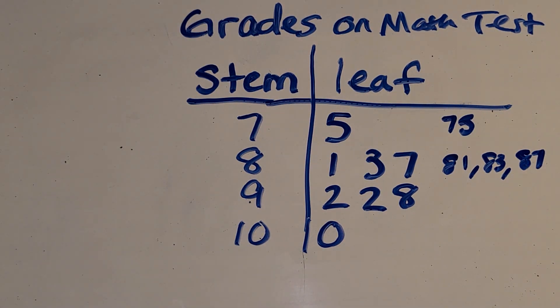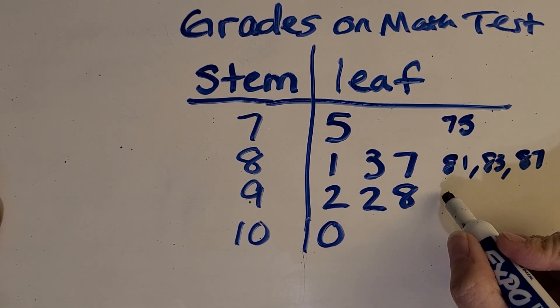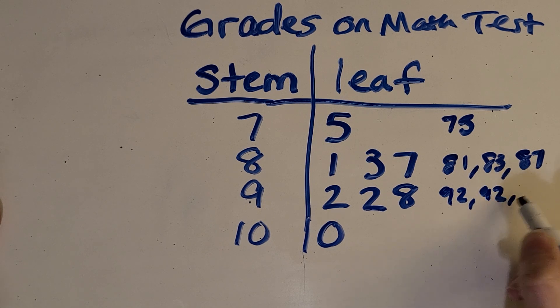Let's do the 90s now. What do you see? Great. 92, 92, 98. You're getting the hang of it. All right, what is this zero? Does that just mean there's nothing in that range?